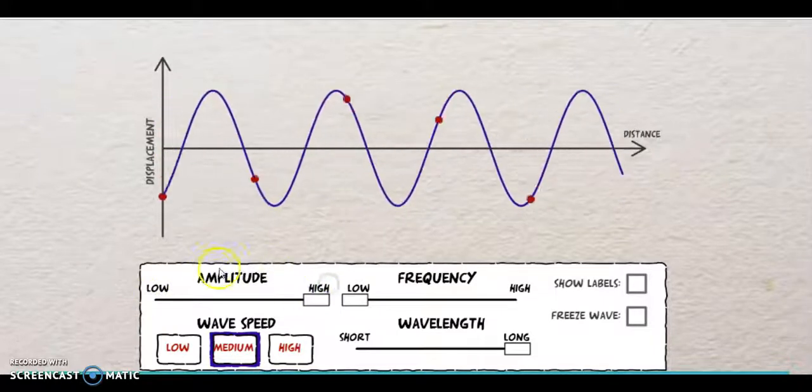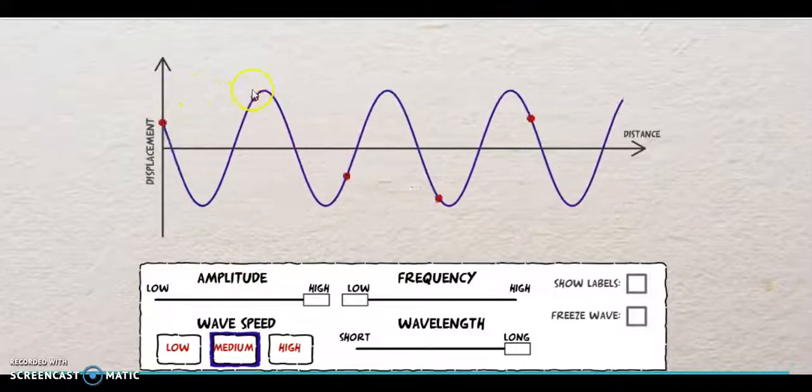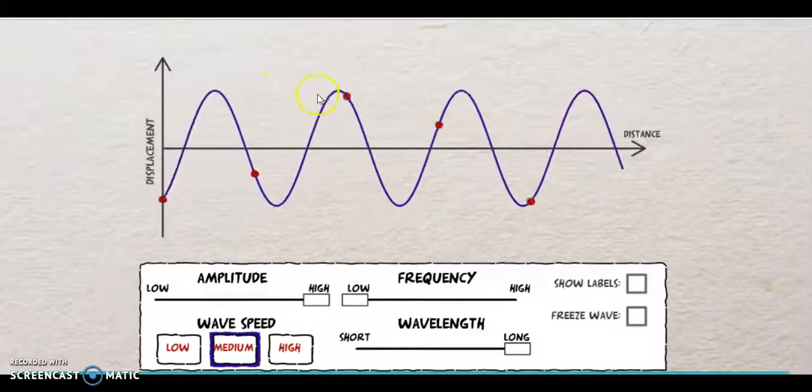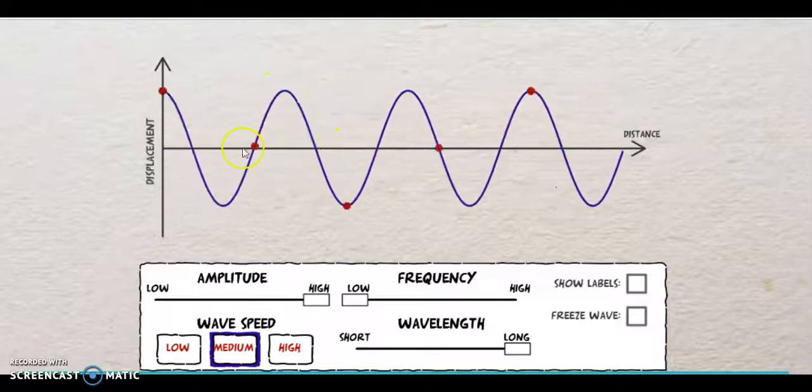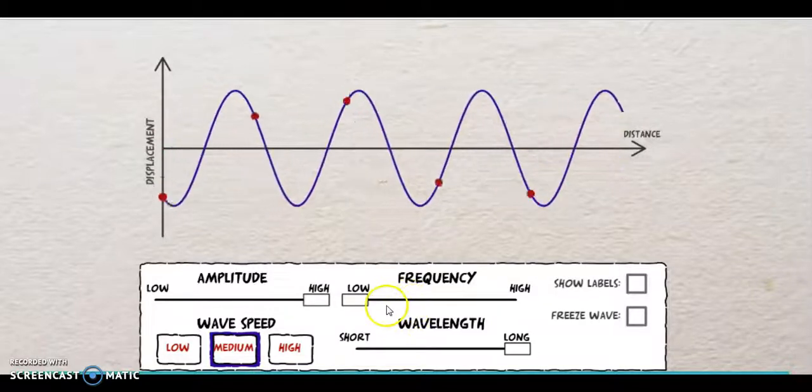So basically, amplitude is simply just the maximum distance of each particle from the rest position. This horizontal line is the rest position.